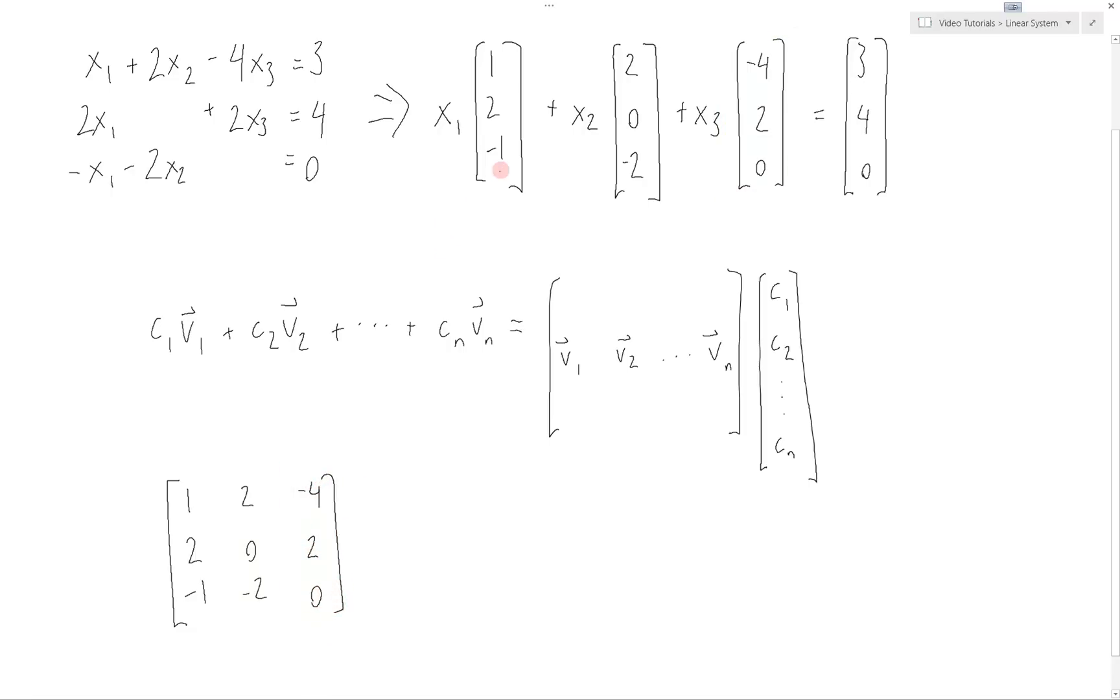Those are just the individual vectors from up here, times our vector of variables (x1, x2, x3). And all of that is still equal to our original solution vector over here. And so there you have the system of equations in a standard matrix form.